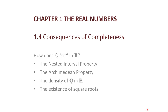Welcome. Today we look at 1.4, Consequences of Completeness. We see four great qualities of the real numbers: the nested interval property, the Archimedean property, the density of the rationals in the reals, and the existence of square roots. Let's go.